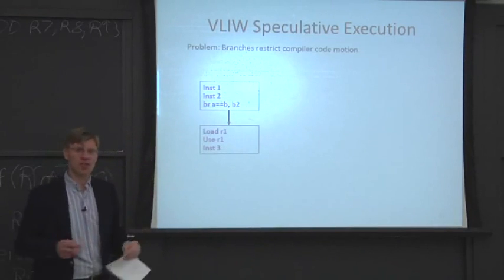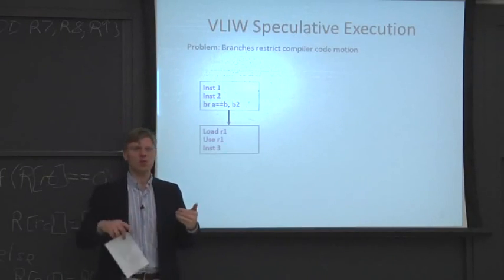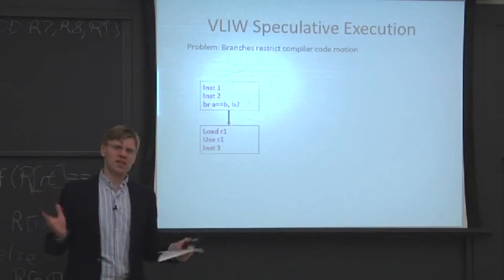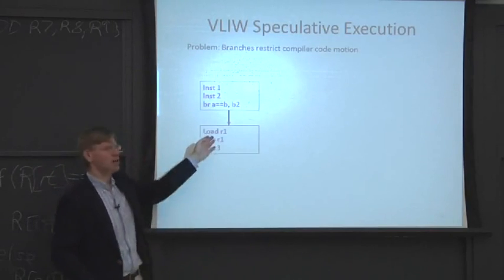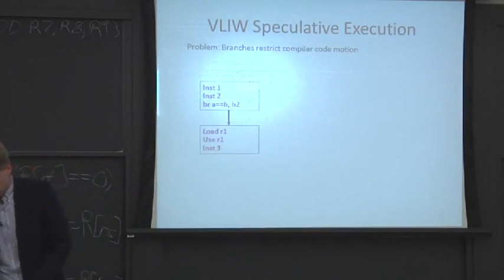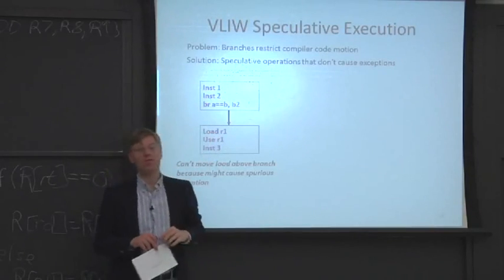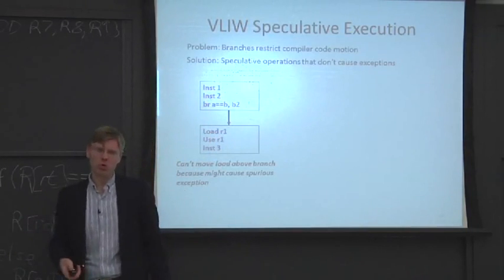Out-of-order superscalars also pull non-dependent loads up across branches, but if a speculative load does something wrong with respect to state, they just don't care about it. We need loads that don't hurt the system. Our solution for VLIW is to add special versions of instructions which don't take faults. If the fault happens, it remembers that the fault happened but doesn't actually interrupt the process, allowing code motion statically at compile time.